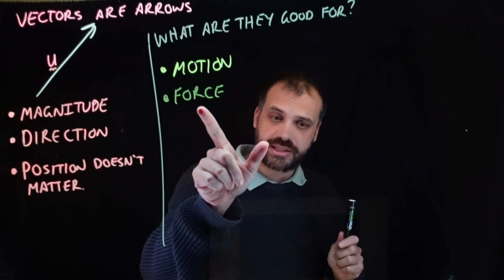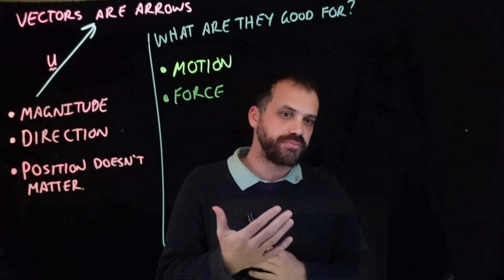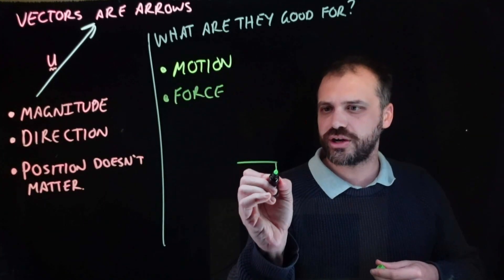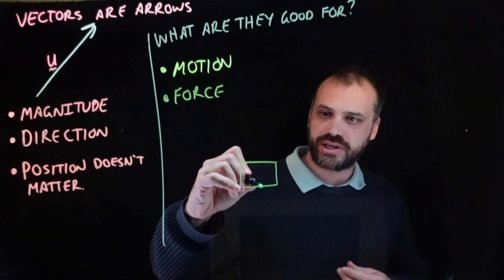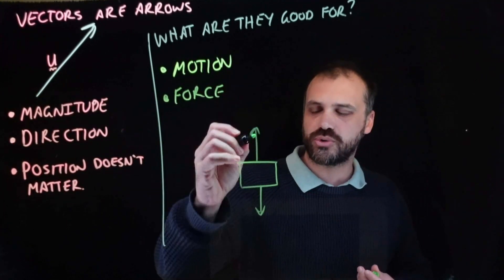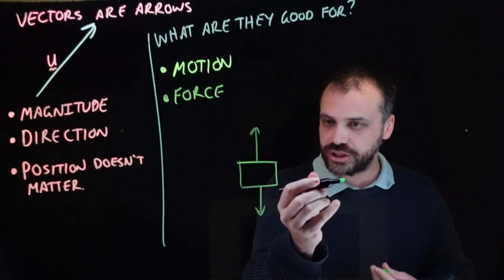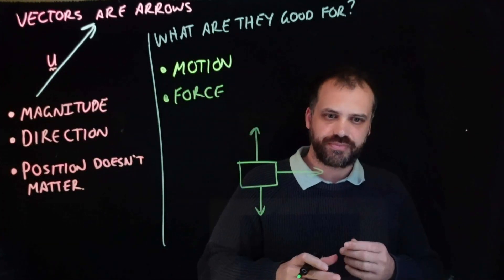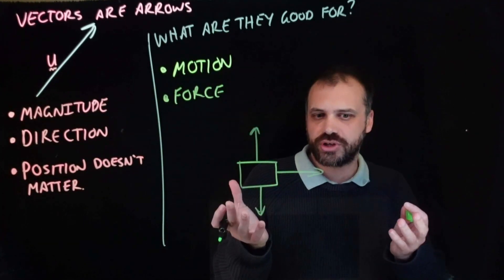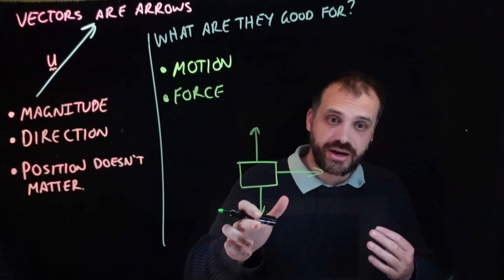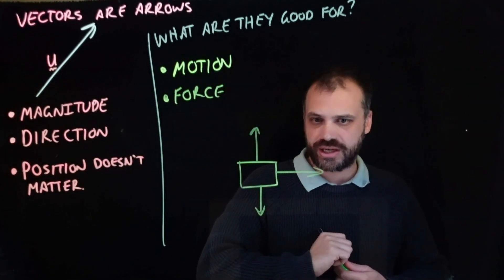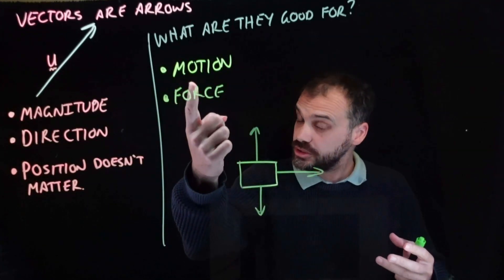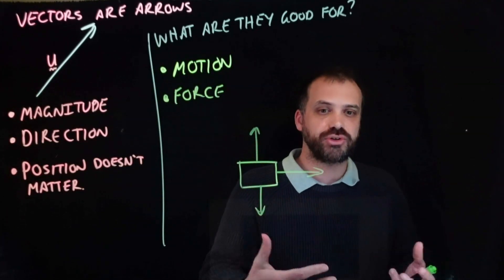Vectors are also fantastic at dealing with force. You might have been in science class doing some physics — you might have drawn a diagram where gravity is acting on an object, there's a normal force, and maybe someone's pushing the object so it's moving in a direction. These free body diagrams, these force diagrams — vectors. Arrows described using vectors. Vectors are super useful when it comes to the laws of motion and how forces act on objects.